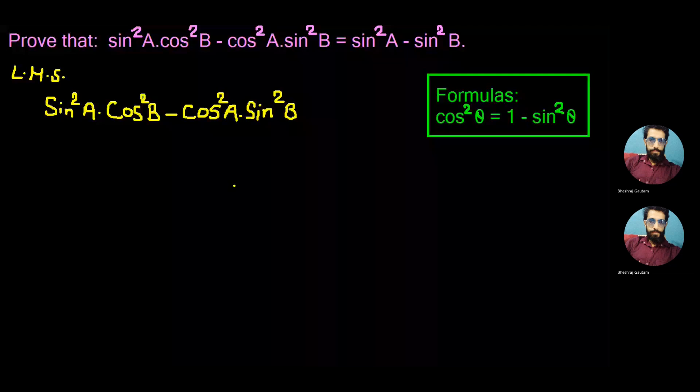Question from trigonometry in our today's class where we have left hand side as sin²A·cos²B - cos²A·sin²B and we are expected to prove sin²A - sin²B as the result on right hand side.